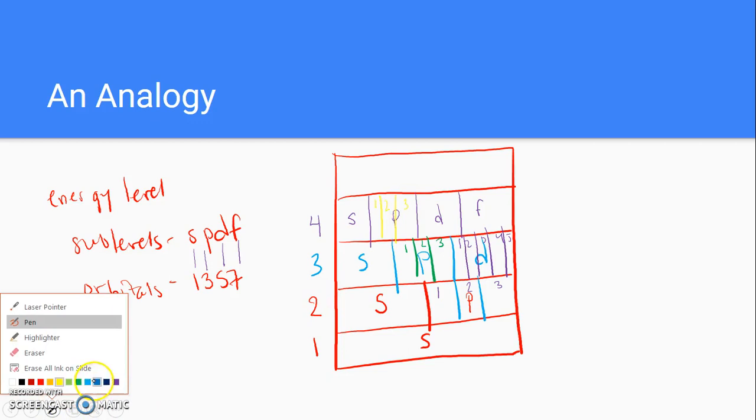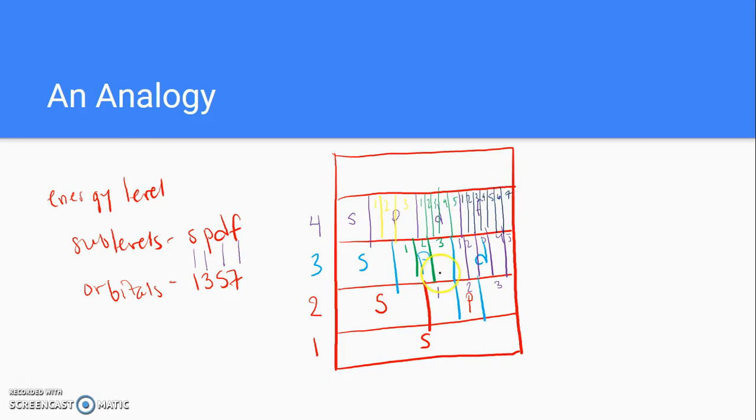And then the D has 5, so approximately 5 bedrooms there, 1, 2, 3, 4, 5. And then the F is going to get quite interesting. I'm not sure if I can even do it. Okay, 1, there's 2, 3, 4, 5, 6, and 7. So 1, 2, 3, 4, 5, 6, and 7. Oh, that just fit.